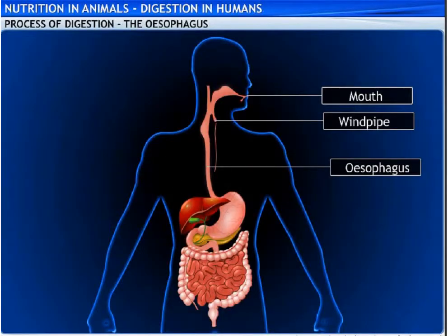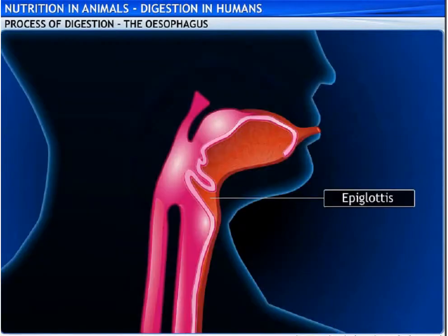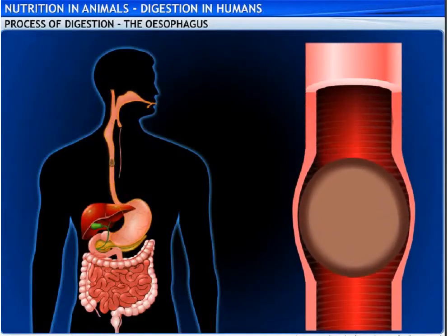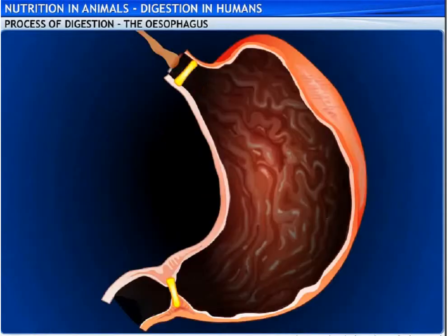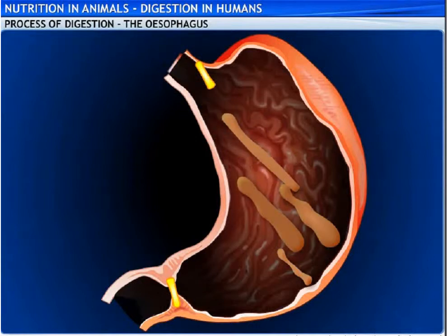This is the esophagus, also known as the food pipe or the gullet, and is about 25 cm long. This pipe runs along the neck and the chest and conducts food from the throat to the stomach. The food is pushed down by a special movement of the walls called peristalsis, which takes place throughout the alimentary canal, thereby pushing the food downward.